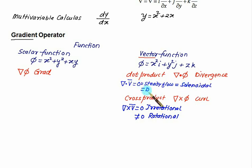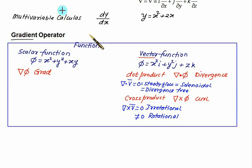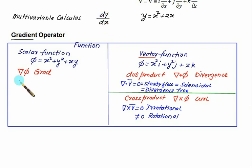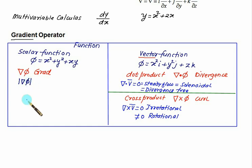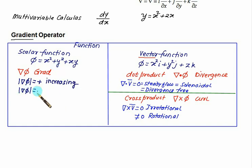Divergence equal to zero is also called a divergence-free vector or solenoidal flow. In GATE examinations, they may use any of these terms and you need to set that value equal to zero to find the unknown. The magnitude of the gradient is also called the directional derivative — you take the gradient and then find its magnitude. If the value is positive, it is increasing; if negative, it is a decreasing rate.